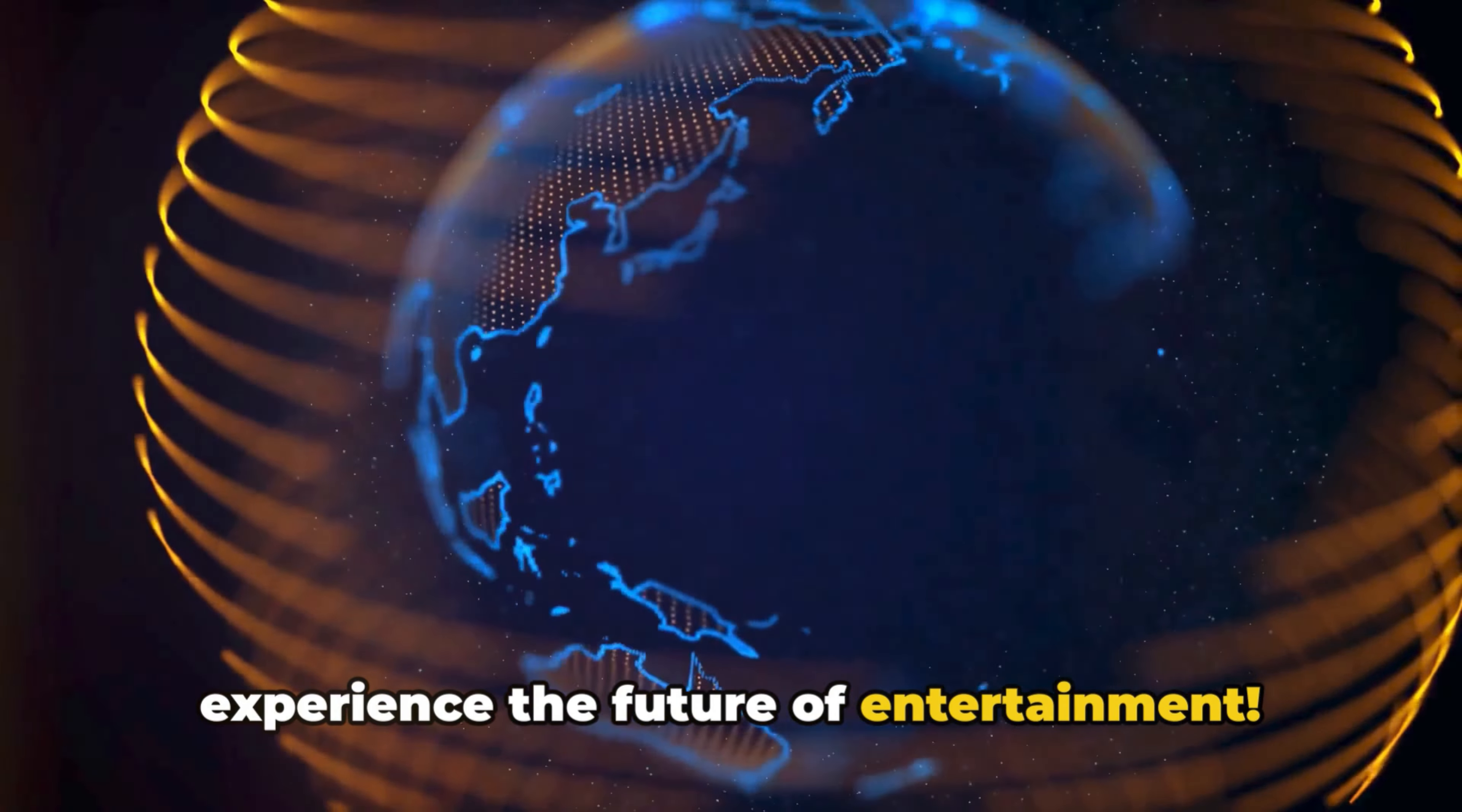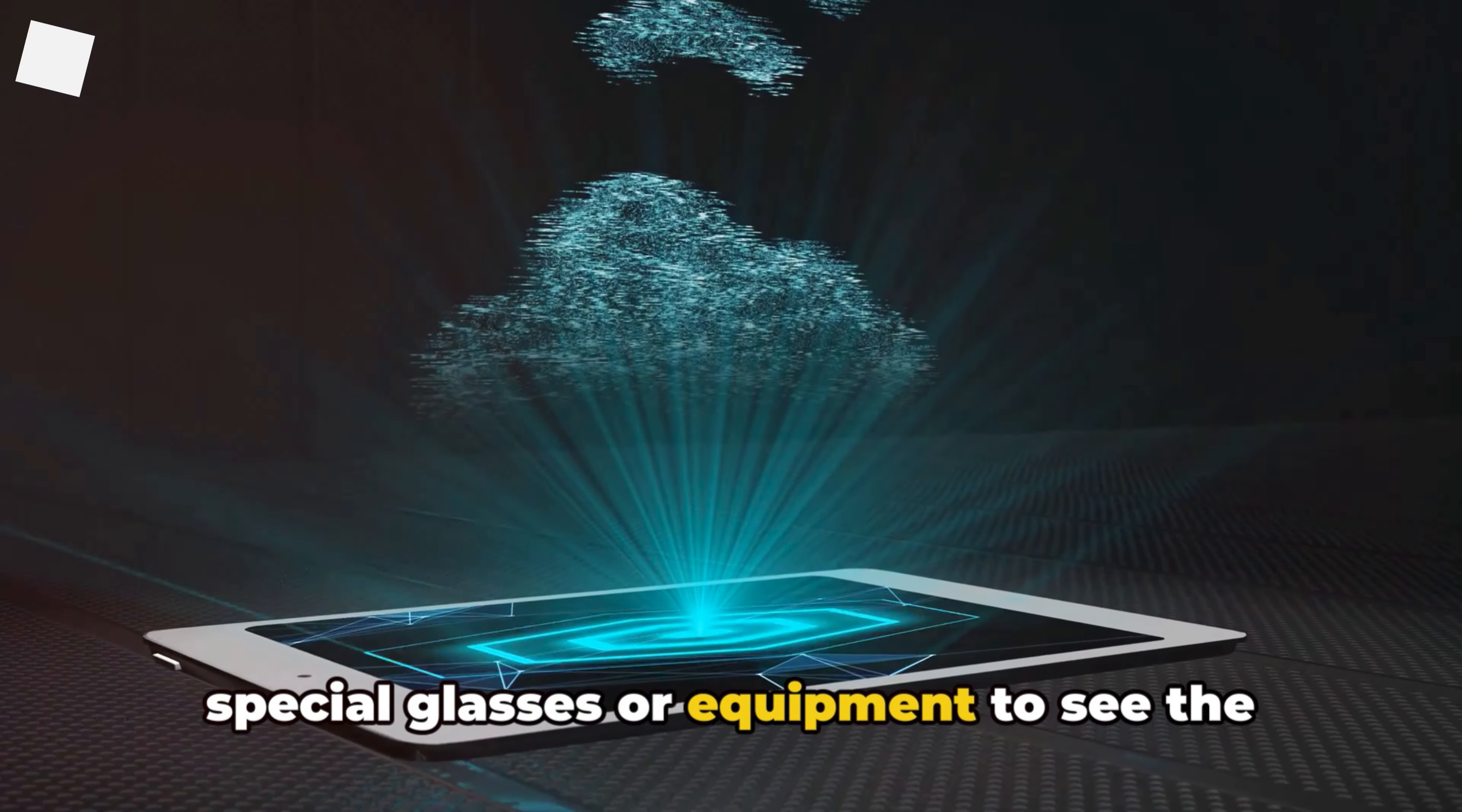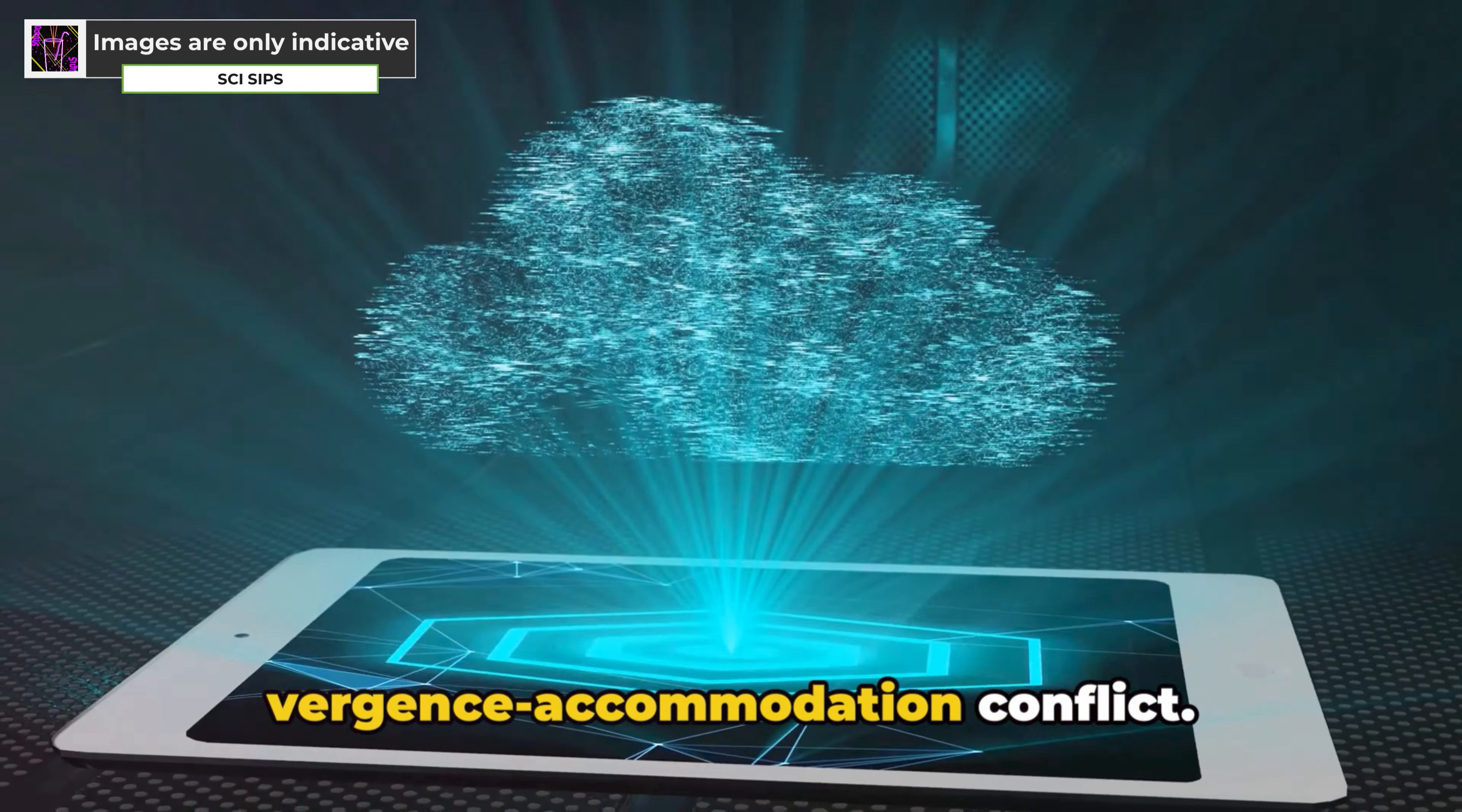Holographic displays are a type of 3D display that uses light diffraction to create the illusion of a three-dimensional image. Unlike other 3D displays, holographic displays don't require viewers to wear special glasses or equipment to see the image in 3D, and they avoid causing eye strain associated with vergence accommodation conflict.